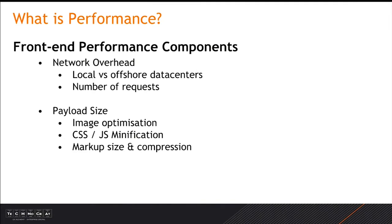In terms of front-end performance, the main components are network overhead. Can I just get a show of hands — who here generally hosts websites overseas, like in the US or Europe? How much time do you think is being added to every single request by having it in the US? Let's say the West Coast — it's about 200 milliseconds per request. On a standard Drupal website, you've got the first page request to get the markup, then for every CSS stylesheet, every JavaScript file, every image, and if you're on SSL, for every handshake, you're adding another 200 milliseconds. On a big, rich, heavy site, you could be adding four or five seconds on every page load just in network overhead.